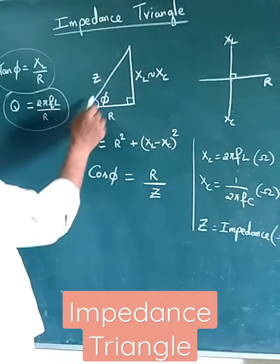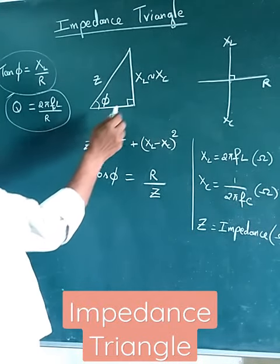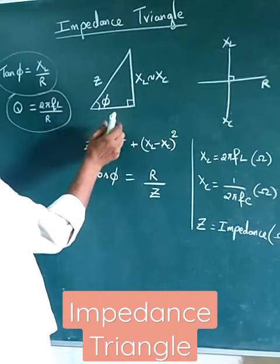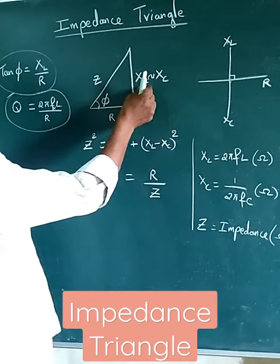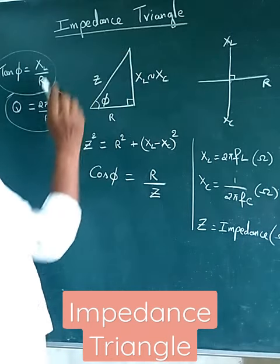Impedance triangle. So this is a right angle triangle. This side is R, resistance. XL difference XE. Hypotenuse Z.